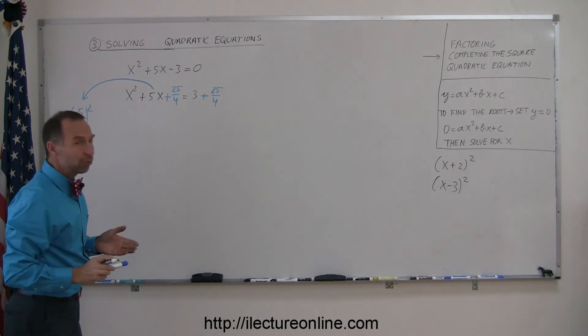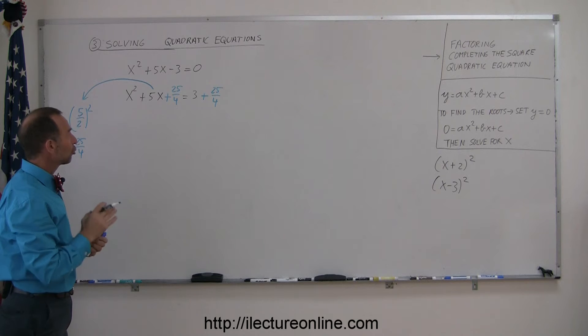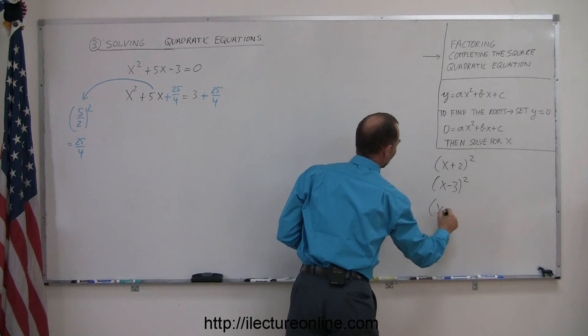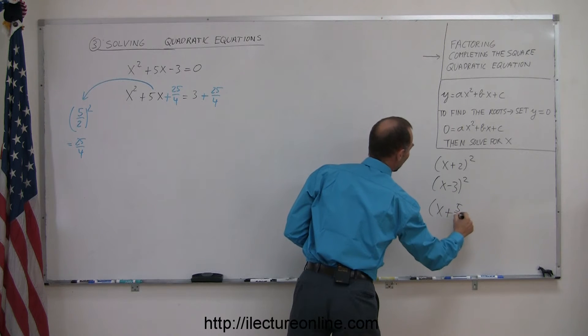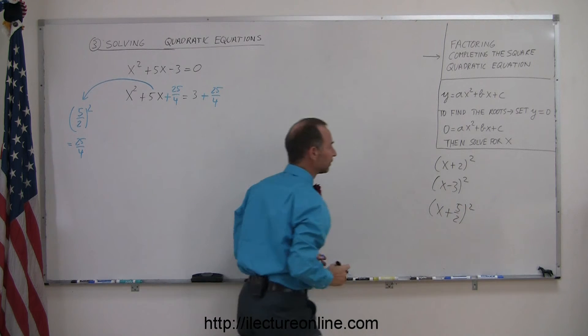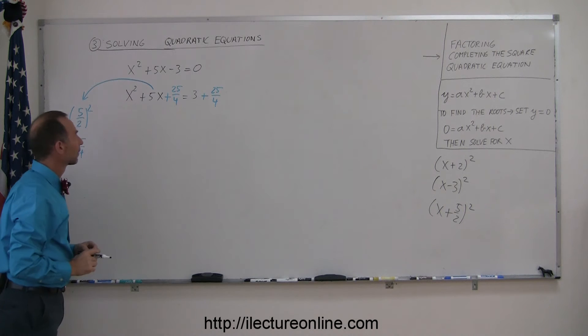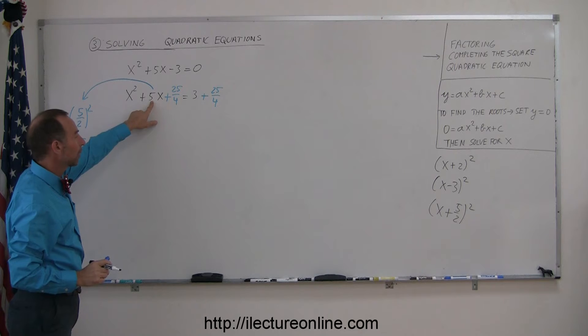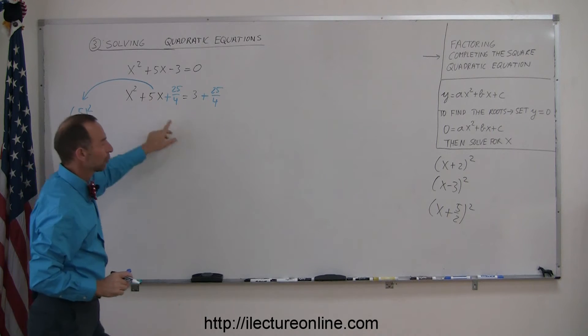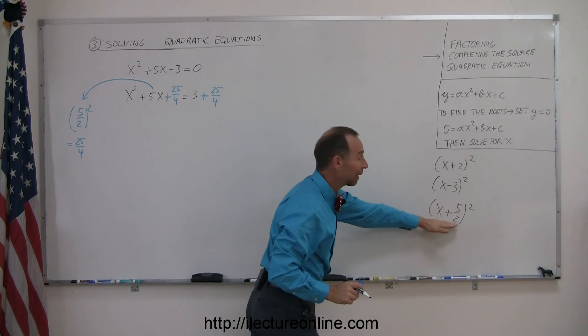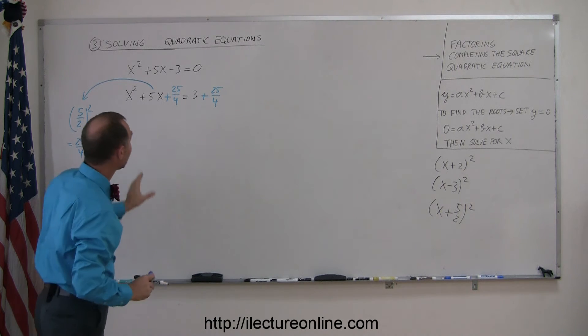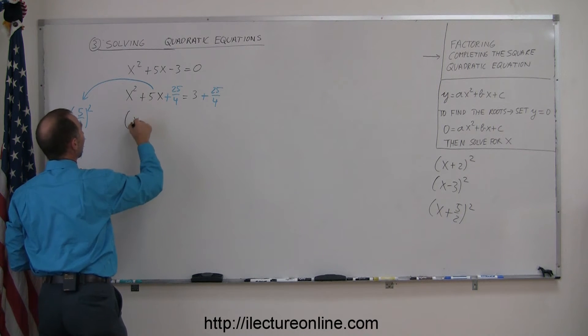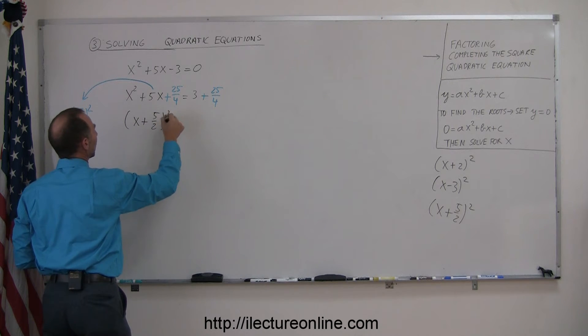But in this case, since we used the completion of the square method, we've ensured that this will look like x plus 5 over 2 squared. Notice, it's half the middle term squared, and if you take half the middle term and we add it to an x in a binomial like that and we square the whole thing, that will be the perfect square of this, so this can be written as x plus 5 over 2 quantity squared.